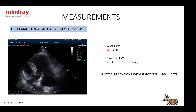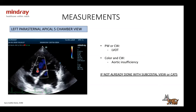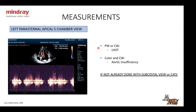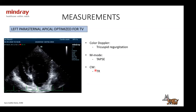For the left parasternal five-chamber view, perform the same measurements as the subcostal view if not already done: pulsed wave or continuous wave of the aortic flow, and if there's aortic insufficiency, measure it with color Doppler and continuous wave. Note that the beam alignment here may not be as optimal as from the subcostal view. Then move to the left parasternal apical optimized for the tricuspid valve view — with color Doppler, assess for tricuspid regurgitation.